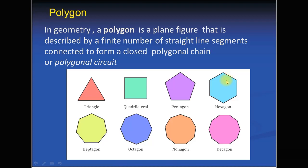The hexagon is also a polygon and there are six sides connected to form a closed polygonal chain. Another type of polygon is the heptagon. The heptagon has seven sides — one, two, three, four, five, six, and seven — and in this heptagon there are seven sides connected to form a closed polygonal chain.